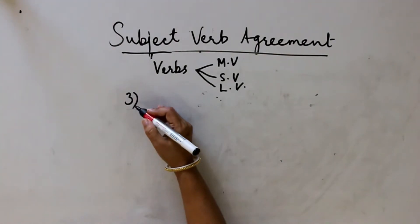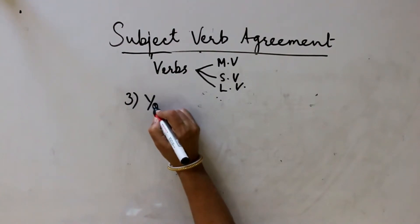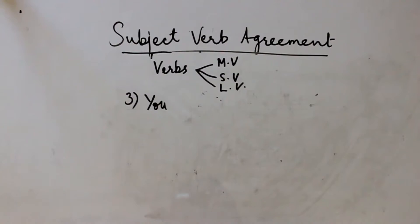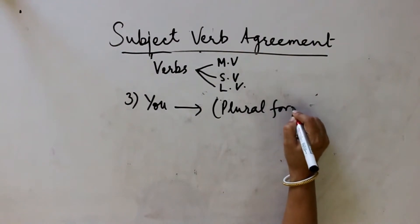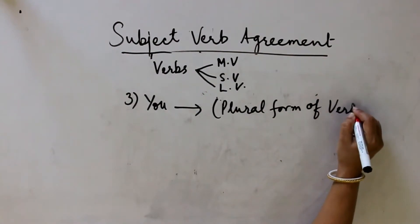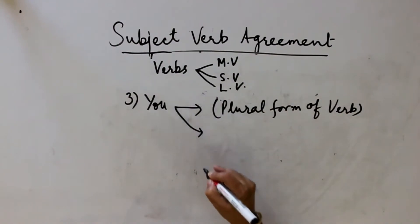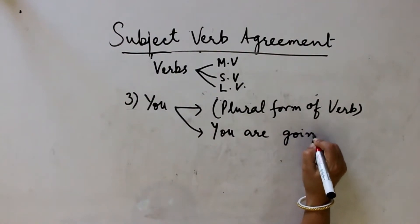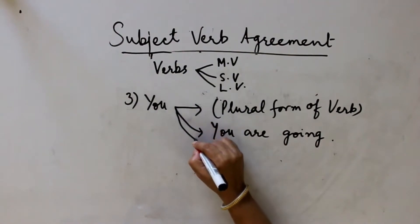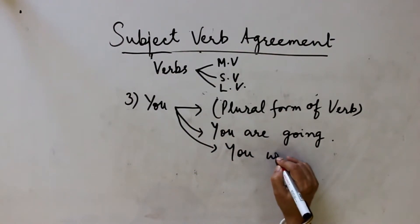Now let us take the second person pronoun. As I told you, 'you' can be considered as singular or plural. But mind it — whenever we use 'you,' whether it refers to one person or more than one person, the verb will only be in plural form. So if my sentence is in present tense: 'you are going.' If in past tense: 'you were going.'